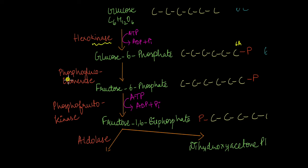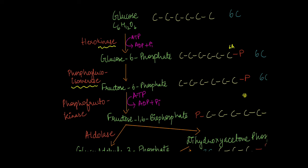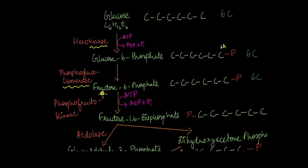The next step involves the enzyme phosphoglucoisomerase. Being an isomerase, it converts glucose-6-phosphate into its isomer, which is fructose-6-phosphate. Isomers are molecules with the same molecular formula but a different structure. So because fructose-6-phosphate is an isomer of glucose-6-phosphate, it is also still a 6-carbon molecule.